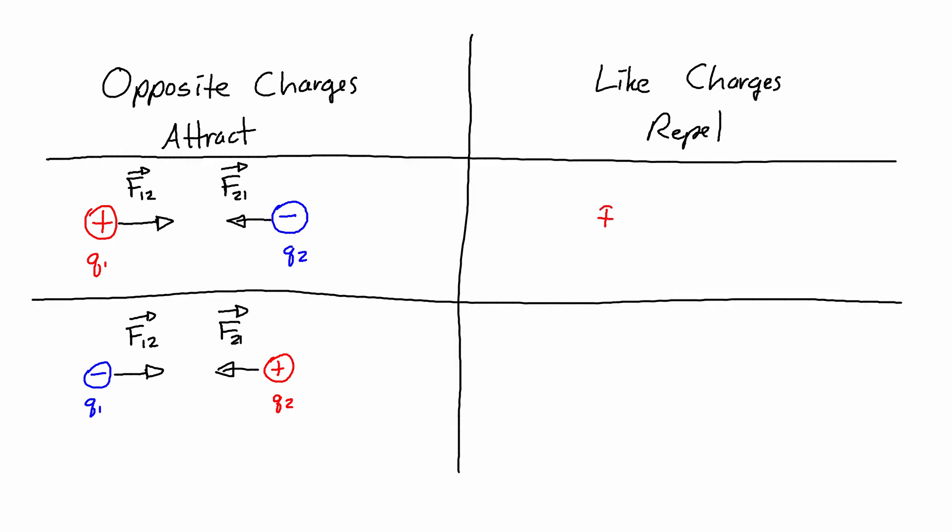Like charges, on the other hand, repel. So if I have positive Q1 and positive Q2, then they repel. The force on 1 exerted by 2 tends to push 1 away from 2. One of the things that's important to note about these being an action-reaction pair is that these forces are always going to have equal magnitude. It's one pushing against the other. Similarly, if I have two negative charges...